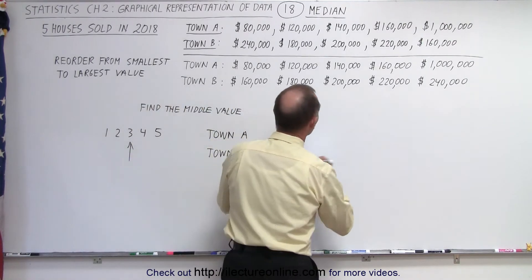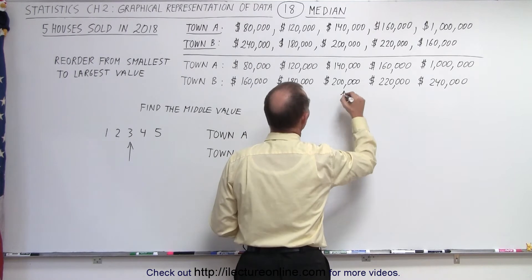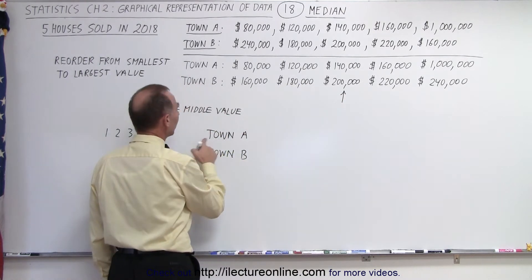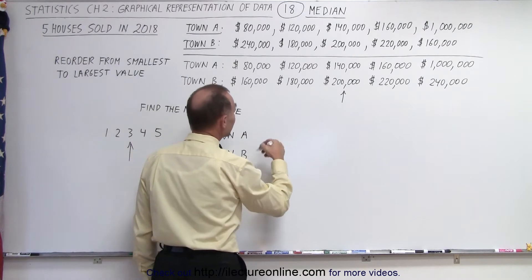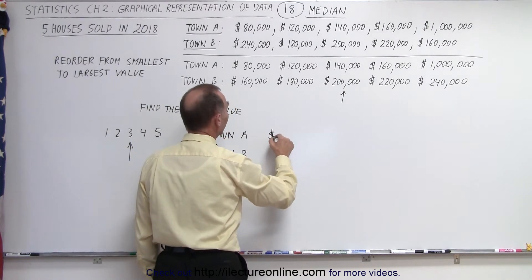And so the middle one, in this case the third one, would be this value right here. Which means that the median for town A, the median house price would be $140,000.